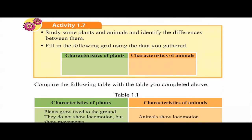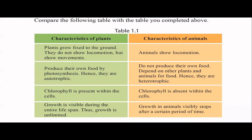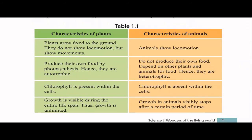In Activity 1.7, they ask you to fill a grid by comparing the characteristics of plants and animals. For example, when it comes to growth: plants have unlimited growth, meaning they continue to grow throughout their whole lifetime. But for animals, visible growth is limited to a certain period — maybe 16 to 18 years — after which height does not change, so animals have limited growth.